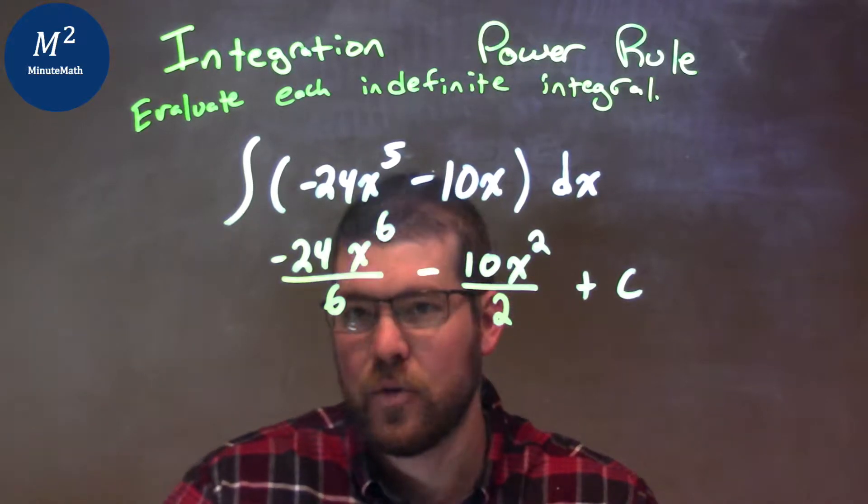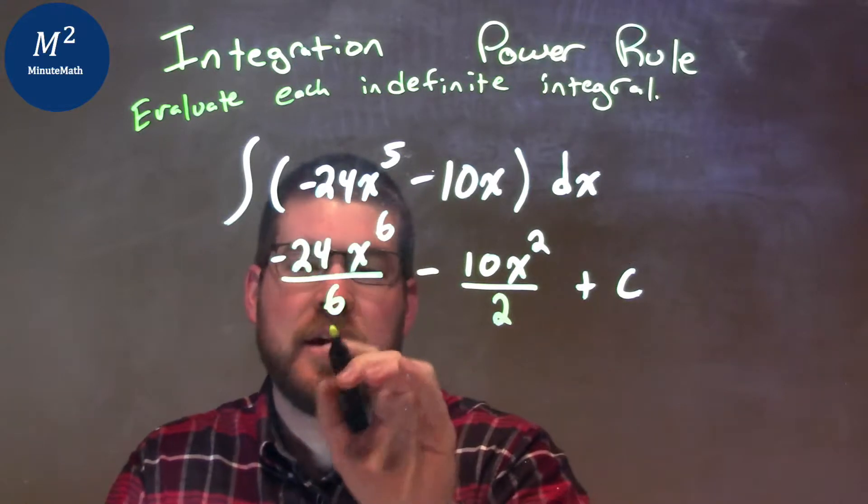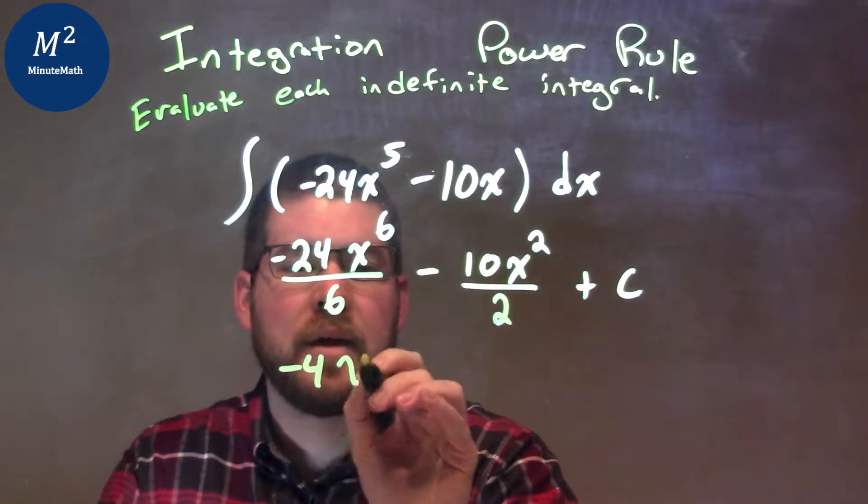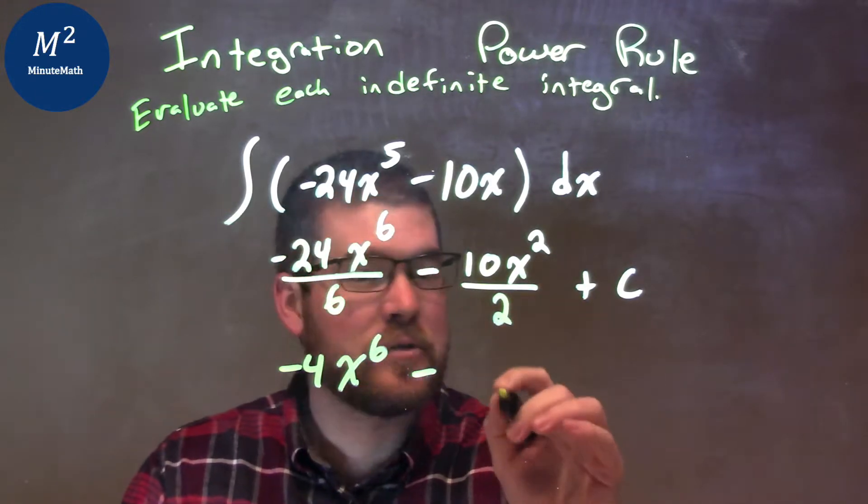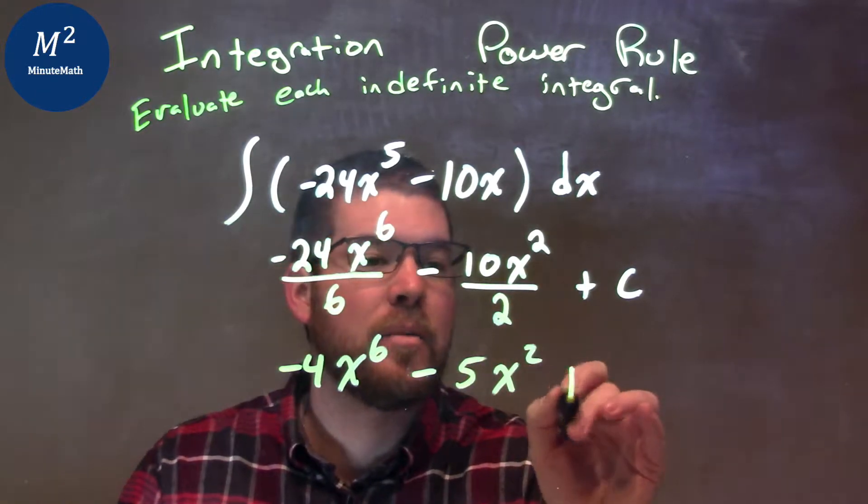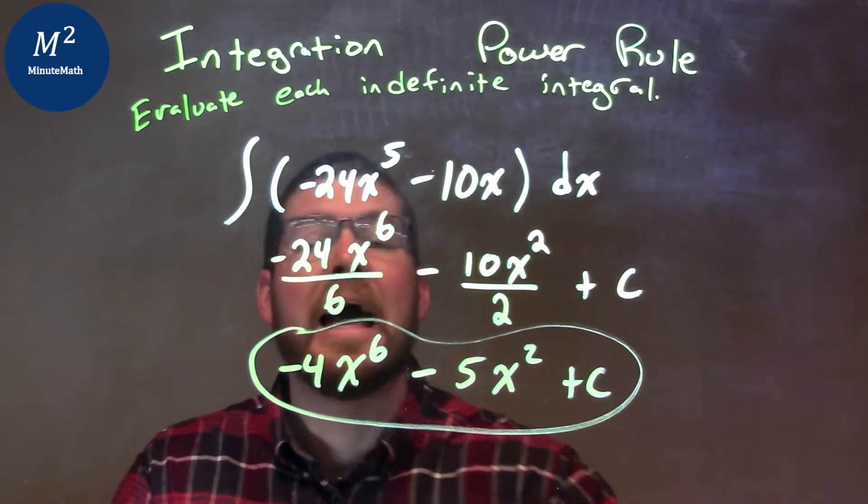Now I've taken the integral, I just need to simplify that. Negative 24 divided by 6 is negative 4, so we have negative 4x to the sixth power minus, well, 10 divided by 2 is 5, so minus 5x squared plus C, and then we have our final answer.